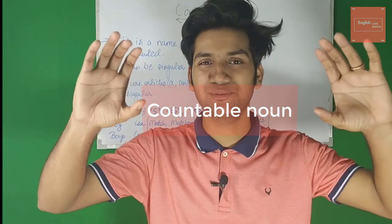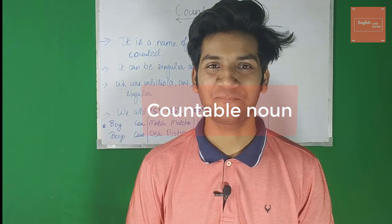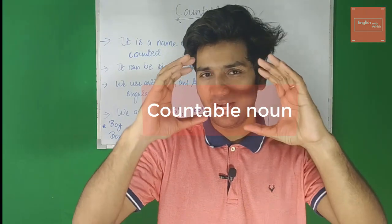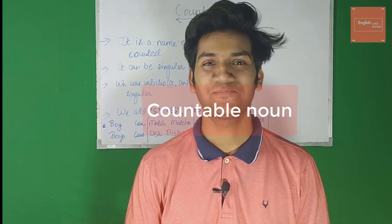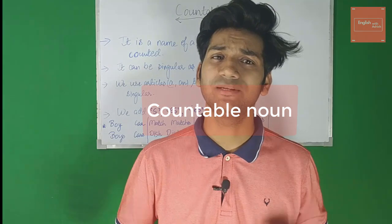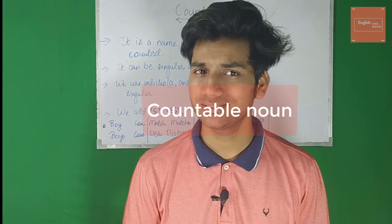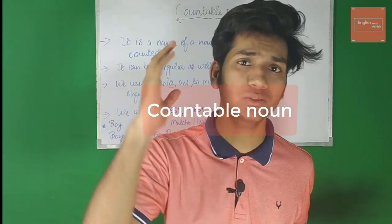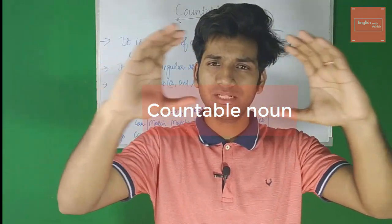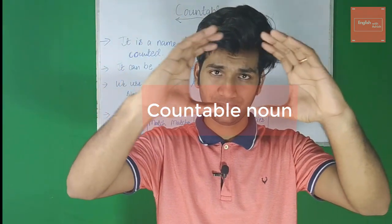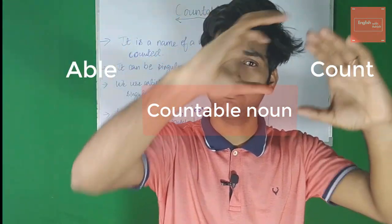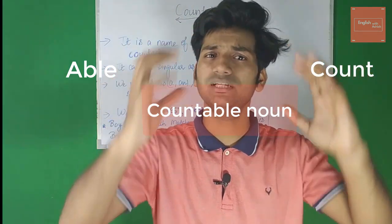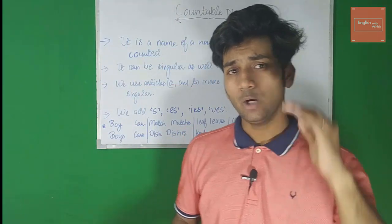We'll start with the very first type: countable noun. I'm going to ask you a question — what comes to your mind when you look at the word 'countable'? You think it can be counted? If you think that, you couldn't be more right. It is a noun that can be counted. Let's break the word down: count — a noun, a name — to be able to be counted. Countable noun: a noun that can be counted.